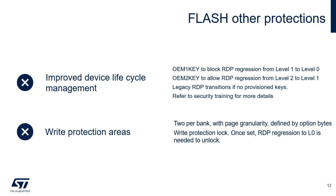Refer to the security training for more information about the device lifecycle. Four RDP areas are supported, two per bank. Program and erase operations are prohibited in RDP areas. Consequently, a software mass erase cannot be performed if one area is RDP. Each area is defined by a start page offset and an end page offset related to the physical flash bank base address. Each RDP area can be independently locked; in this case, it is not possible to modify the area settings, and the unlock can be done only thanks to RDP regression to level 0. The write protection attribute is orthogonal to the secure and HDP settings.